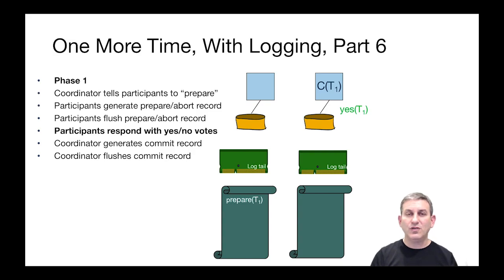When the coordinator gets all the votes from all the participants, if they're all yes, it'll generate a commit. If any of them are no, it'll generate an abort. It'll put a commit record in the log tail. When that log tail is flushed, we are done with the end of phase one of two-phase commit.